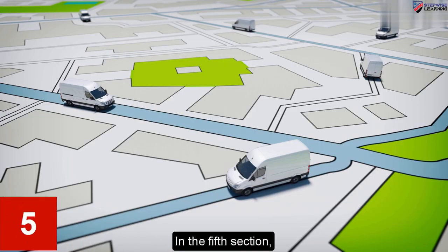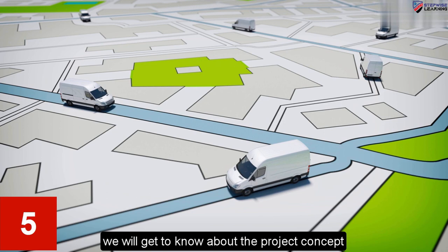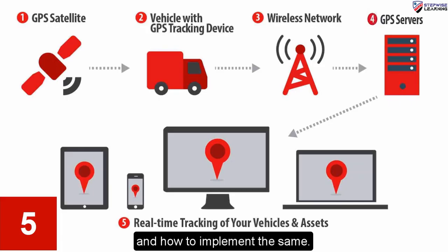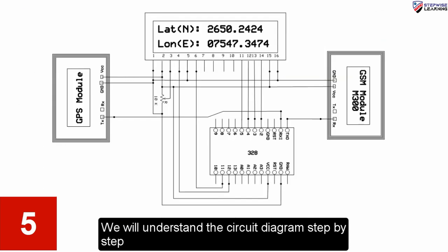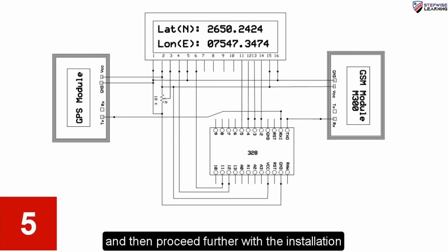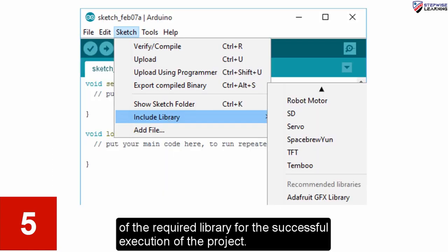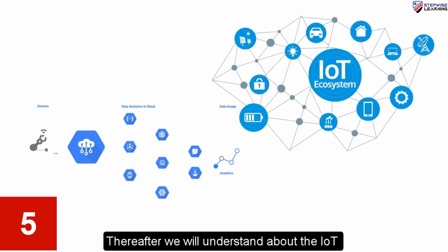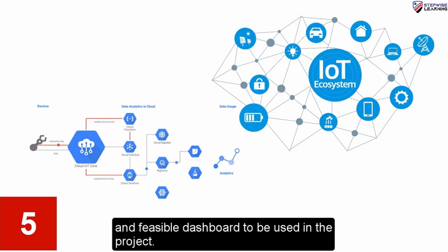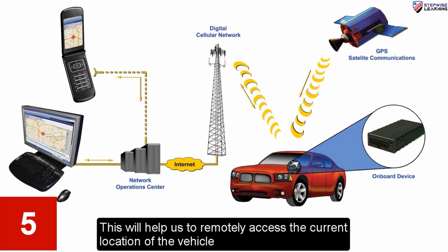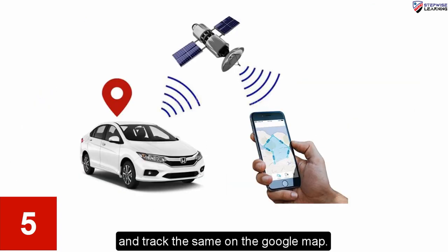In the fifth section, we will get to know about the project concept and how to implement it. We will understand the circuit diagram step-by-step and then proceed with the installation of the required library for successful execution of the project. We will also understand the IoT and the feasible dashboard to be used in the project, which will help us to remotely access the current location of the vehicle and track it on Google Maps.